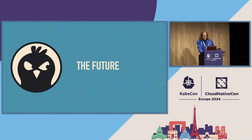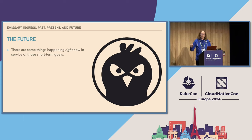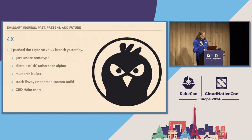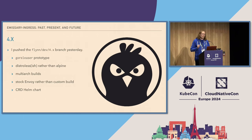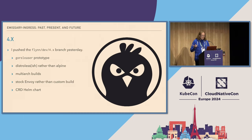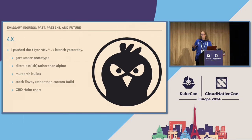For the short-term goals right now, I have pushed a branch on the Emissary source called FlynnDev4.x. The current release of Emissary is 3.9 or 3.10, so the 4 is important there. This is a prototype using GoReleaser to build the thing. It uses Distroless rather than Alpine, it does multi-arch builds, it uses stock Envoy rather than a custom Envoy, and it has a CRD Helm chart rather than having to use kubectl apply to get the CRDs in.